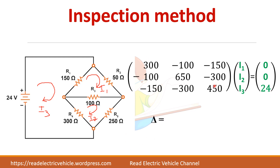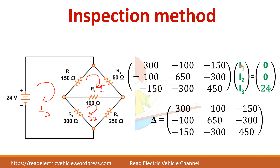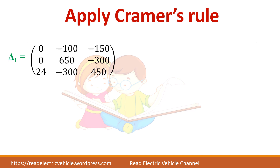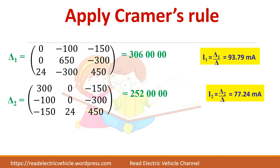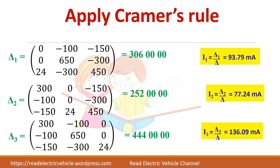Find the determinant of this matrix. To find I1, replace the first column with the voltage vector to get Δ1. Similarly find Δ2 and Δ3. Note: the answers come out in milliamps, so remember to write the units — you can also express it as times 10 to the power of minus 3 amps. Don't forget to write the unit.